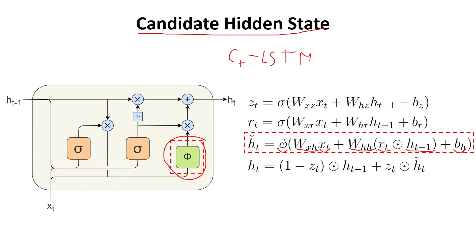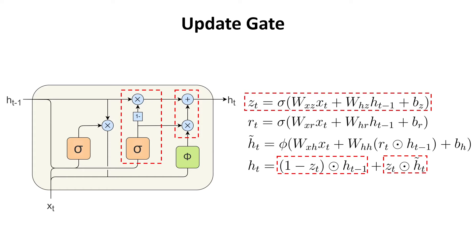Finally, we have the update gate, which stays at the core of the gated recurrent unit. We left this one to be explained last because we needed to understand the previous operations first. This gate selects what to transfer from the previous hidden state and what to transfer from the current candidate hidden state to the next step. We compute Zt using Xt multiplied by a weight matrix and the previous hidden state multiplied by another weight matrix, adding a bias and applying the sigmoid activation function.